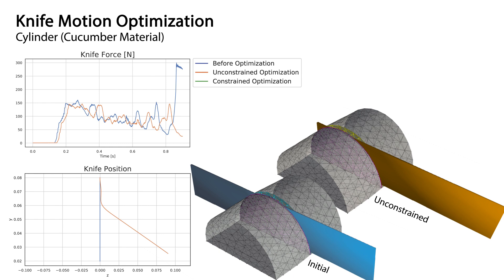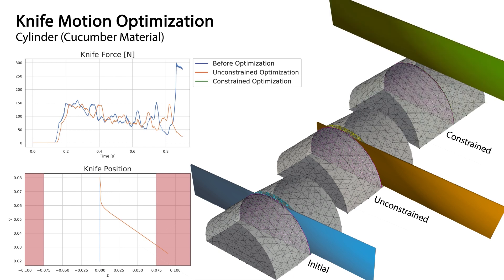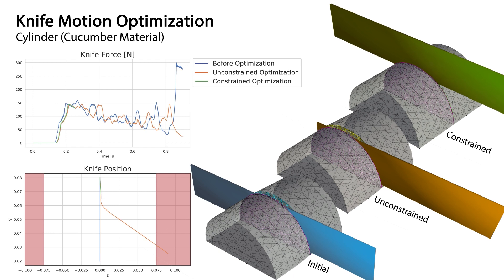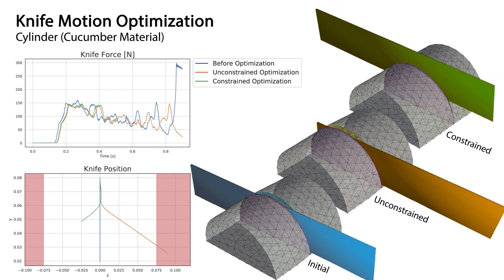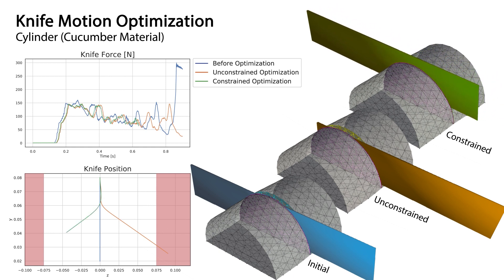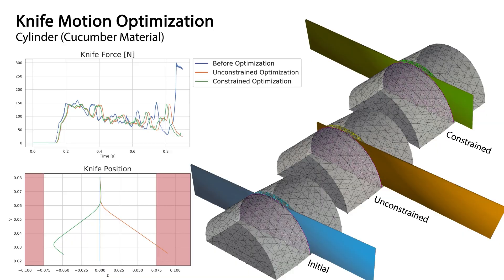Therefore, we add a hard constraint to keep the lateral motion within valid limits and employ the modified differential method of multipliers to perform constrained optimization. Thanks to the end-to-end differentiability of Dissect, accurate gradients for such constraints are available and lead to a valid knife motion which requires only 0.3% more force than the unconstrained result.